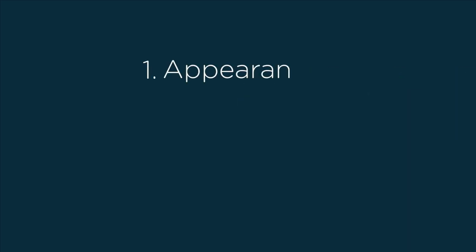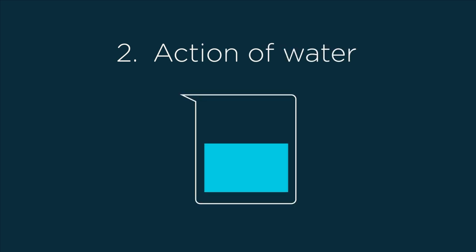Test 1: The compound iron 2 sulfide is a black solid, so it appears different from that of iron and sulfur. Test 2: Action of water. In water, the iron 2 sulfide compound sinks and there is no separation.